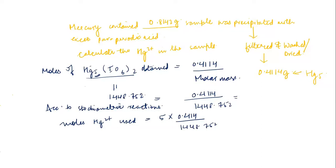This gives us the moles of Hg²⁺. Now we calculate the mass of Hg²⁺ using the formula: moles times molar mass of Hg²⁺.